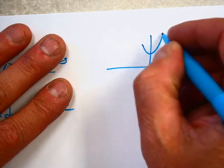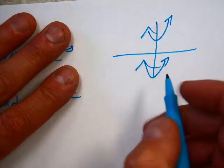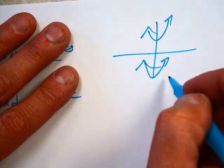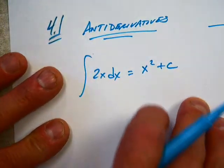But then I don't know. I'm going to throw an arbitrary constant on there because if I would differentiate x squared plus 5, I would get 2x. If I would differentiate x squared minus 10, I would get 2x. I don't know what that constant is.